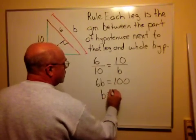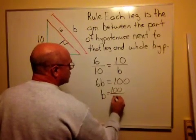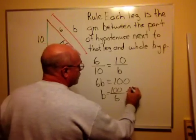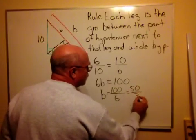This will be B is 100 divided by 6, which I could take a 2 out of each of those, 50 over 3, which would be a perfectly good answer.